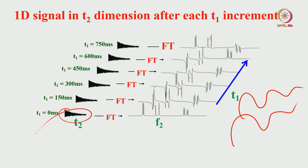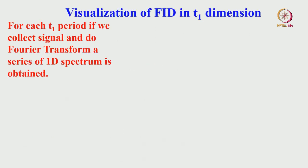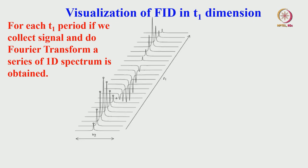This oscillatory behavior forms what is called an interferogram — a time-domain signal in the T1 dimension, similar to what we saw in the T2 period. Typically, about 100 to 512 T1 points are collected. For each T1 period, if you collect the signal and do Fourier transformation, you get a series of 1D spectra — one for each T1 point. The intensity of each peak in these spectra is oscillating as a function of T1.